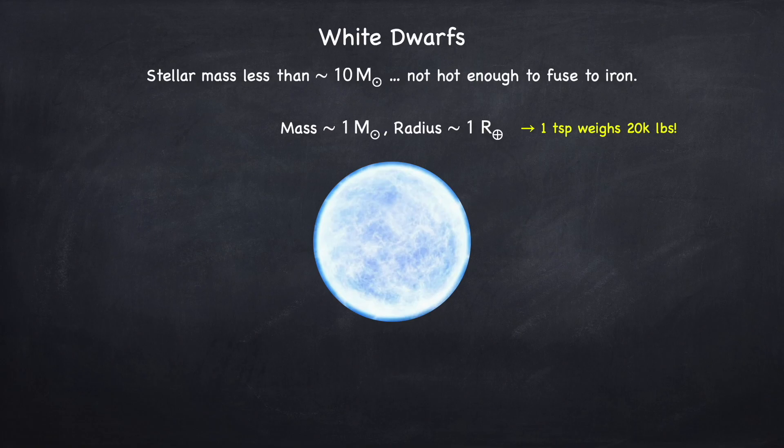Since fusion in a white dwarf will stop somewhere between carbon and iron, the white dwarf is mainly made up of carbon, oxygen, and neon. The exact composition will depend on the initial composition of the star, as well as the actual mass of the white dwarf. The more massive it is, the more heavier nuclei it will contain. So that's basically it. That's the end stage of a star like the sun. Once you get the white dwarf, there's really not much else it can do.